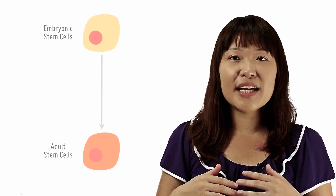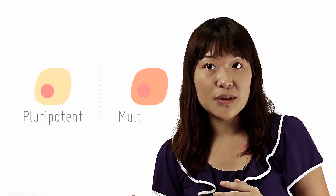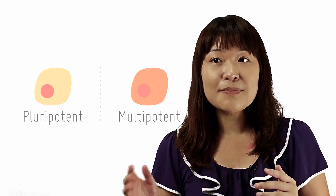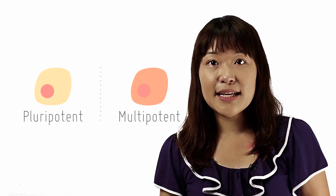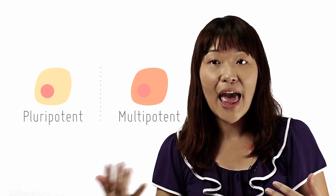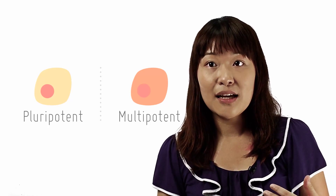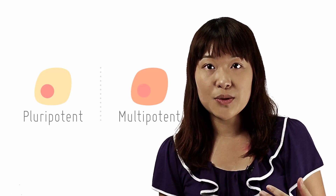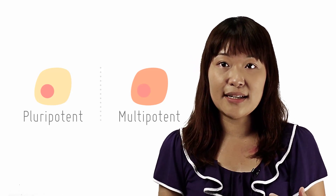So how do they differ from embryonic stem cells? The most important difference is that unlike embryonic stem cells, which are pluripotent, adult stem cells are multipotent. This means that such cells are only able to develop into a limited and related range of cell types and tissues within the organism.